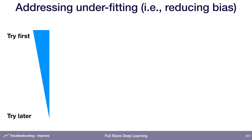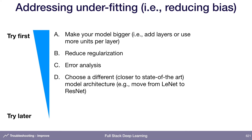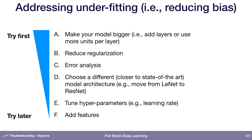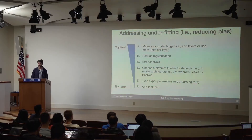There are a number of strategies to address under-fitting. The simplest and often best strategy is just to make your model bigger — make your layers wider or your network deeper. You can also try reducing regularization, error analysis, moving to a different neural network architecture closer to state of the art, tuning your hyperparameters, or adding features. In the deep learning context, adding features is usually not what I would recommend, because in principle our networks are supposed to figure out the features.